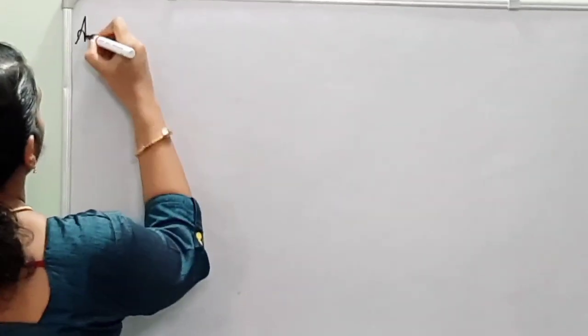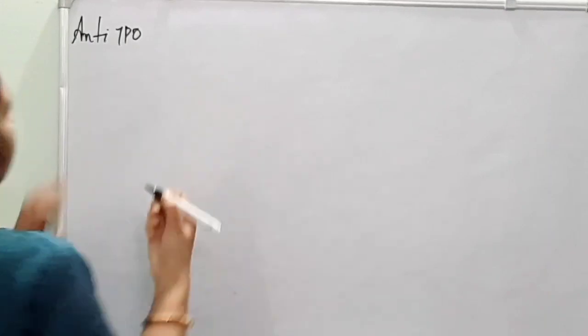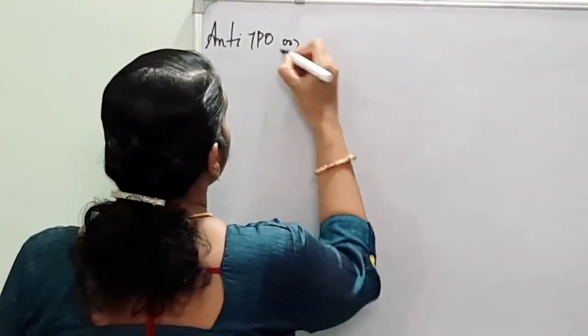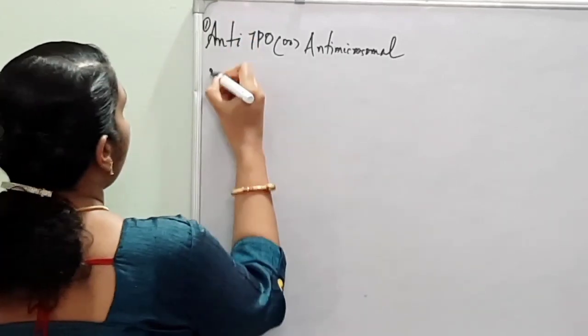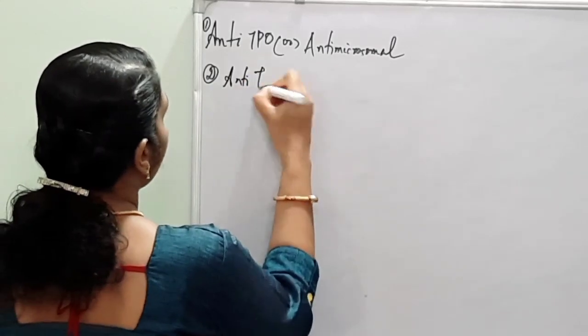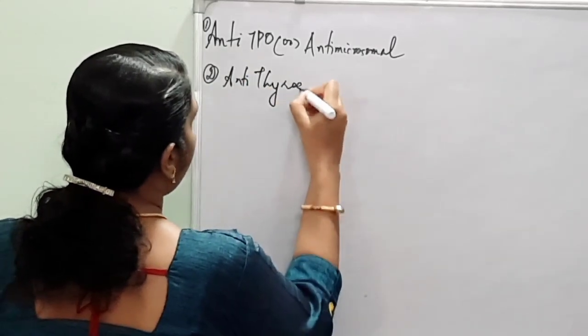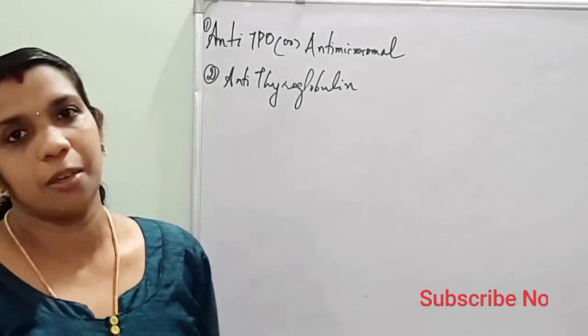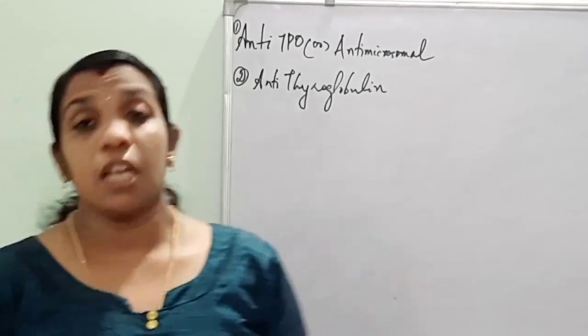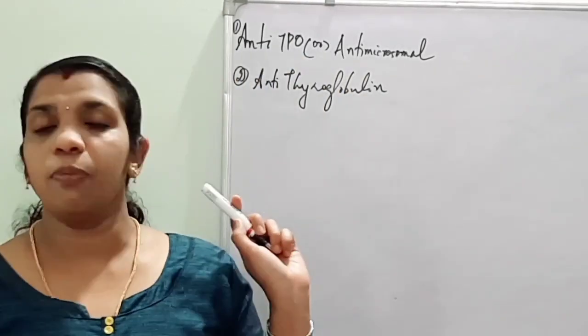These two antibodies are concerned with thyroid disorders. The two antibodies are anti-TPO, that is anti-thyroid peroxidase antibody, also known as anti-microsomal antibody, and the second is anti-thyroglobulin antibody. Before going to the antibodies, we should know something about the synthesis of thyroid hormones, which will make understanding of these antibodies easier.